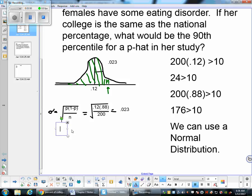So now we can write our equation. 1.28, z is equal to the x value minus our mean, 0.12, over our standard deviation, which is 0.023.